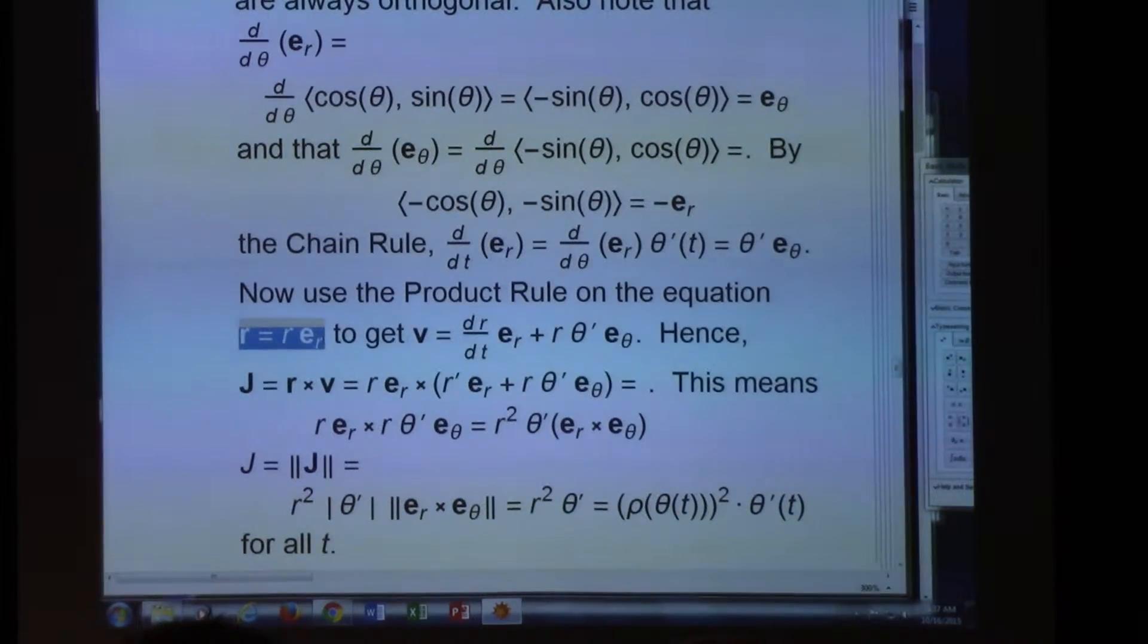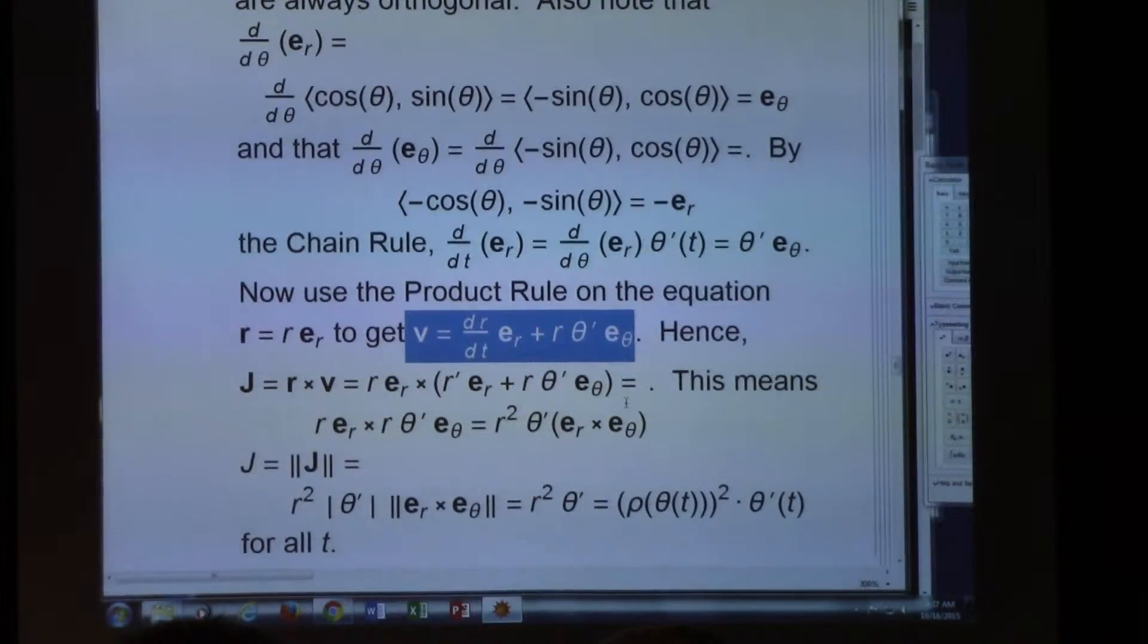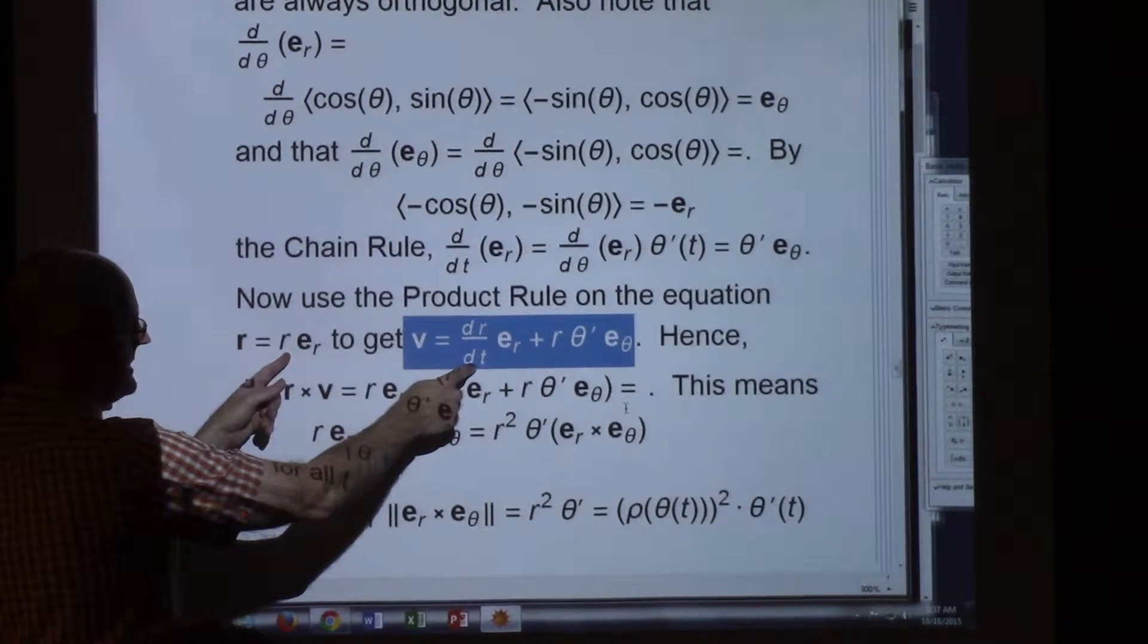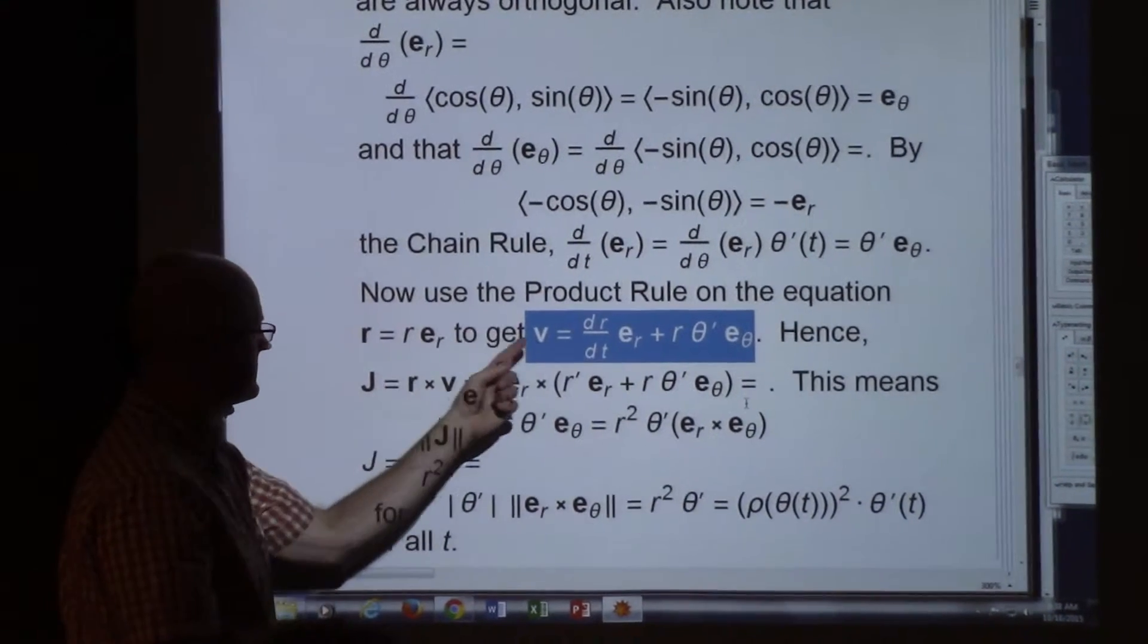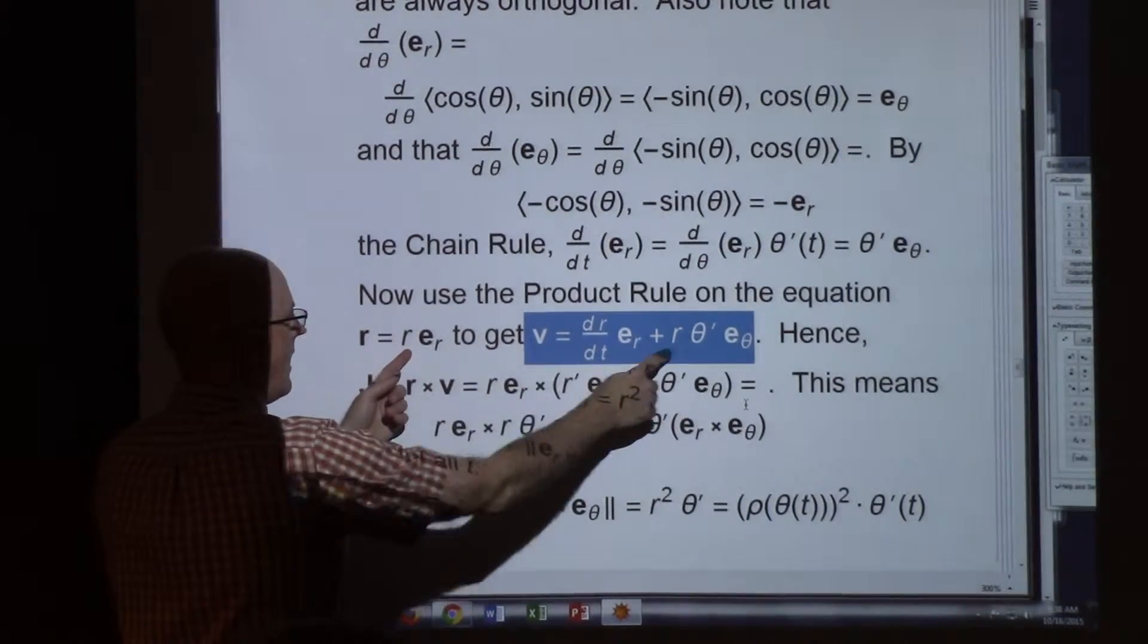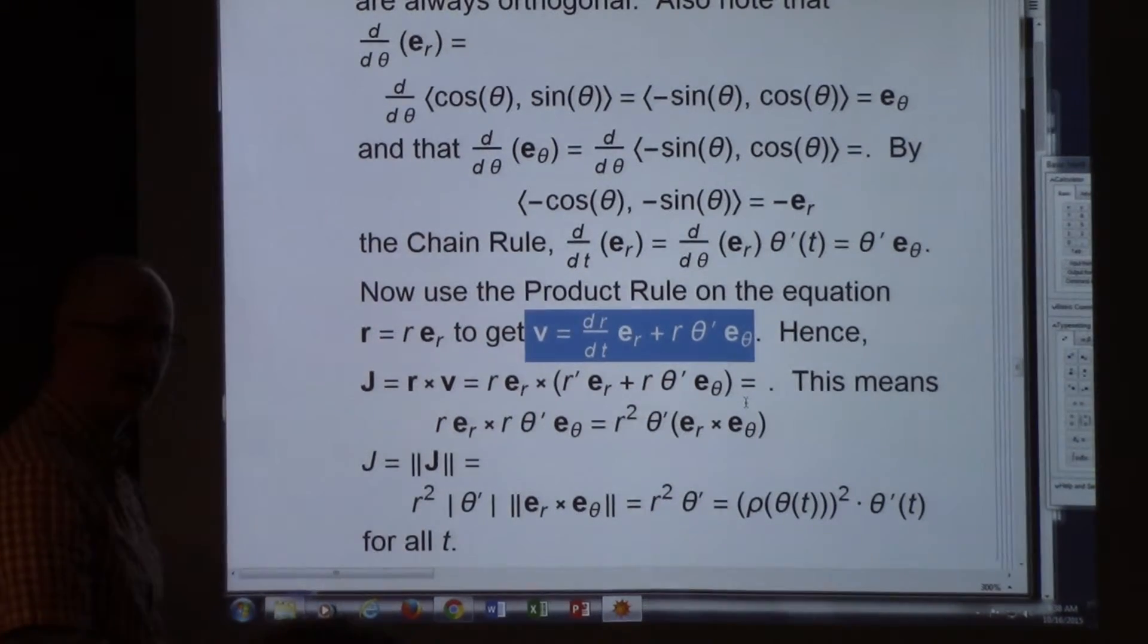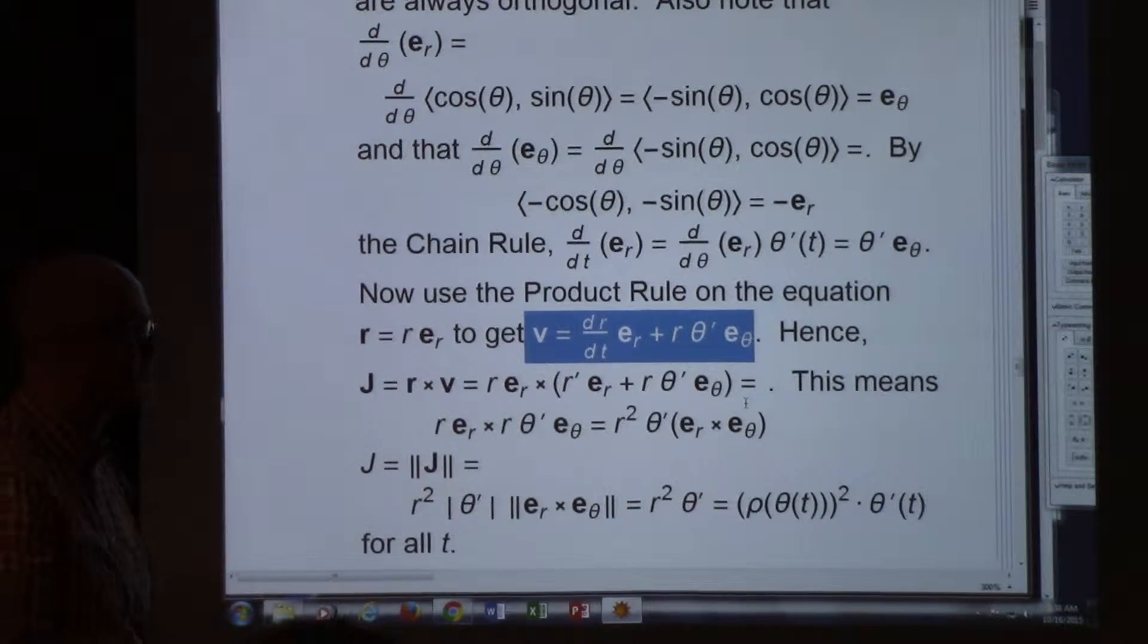We can use the product rule on this equation to write the velocity vector in terms of ER and E theta. It's a product rule. Take the derivative of the scalar R, the length of the vector R. That's DR DT, times the vector ER. So that's the derivative of the first times the second. Plus the derivative of the second times the first. The R is the first. Theta prime E theta is the derivative of the second with respect to t. It comes from the previous long term. It's a product rule for a scalar times a vector.